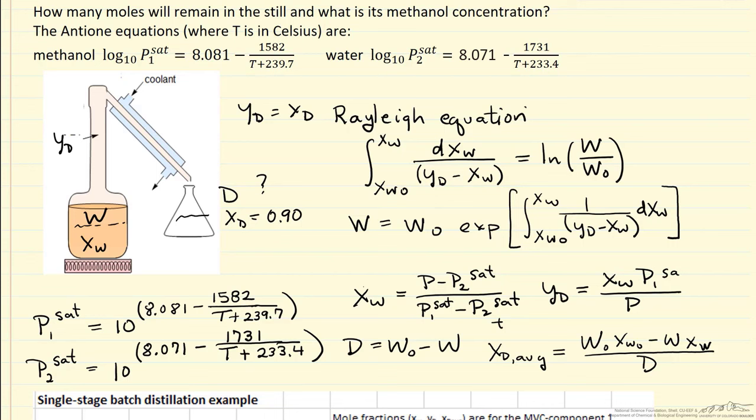To do this integration for the Rayleigh equation in the form we're putting into the spreadsheet, we first need to know the saturation pressures from Antoine's equation to calculate x_w and y_d, the two values in the denominator. However, we need to know the temperature to calculate the saturation pressures.